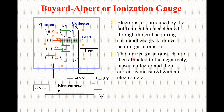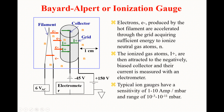After ionization, the ionized gas atoms (I⁺) are attracted to the negatively biased collector, where they are collected. Their current is measured with an electrometer. A typical ion gauge has a sensitivity of 1 to 10 ampere per millibar and a range of 10⁻³ to 10⁻¹¹ millibar.